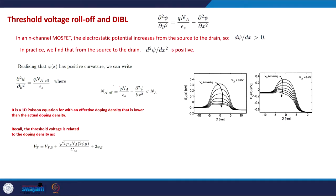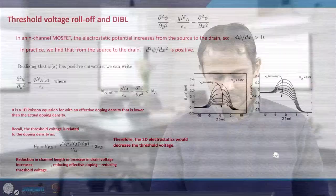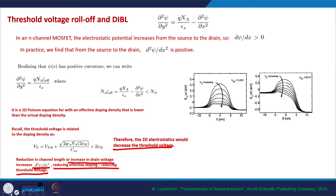Similarly, various other parameters will also change — the depletion width and others — which you can figure out. Essentially, 2D electrostatics decreases the threshold voltage, and reduction in channel length or increase in drain voltage increases del² psi / del x², reducing the effective doping and causing the threshold voltage roll off that can be explained using the 2D electrostatics.